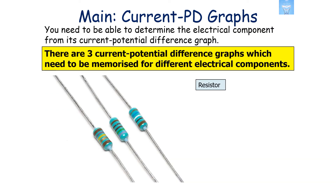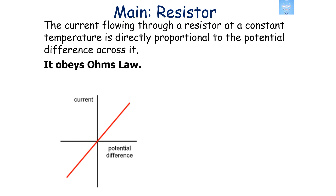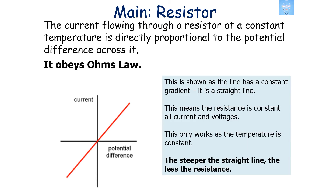You need to be able to determine the electrical component from current potential difference graphs. There are three graphs to memorise: for the resistor, the filament bulb, and the diode. For the resistor, the current flowing through it at a constant temperature is directly proportional to the potential difference across it — so the resistor obeys Ohm's law. This is shown by a line of best fit with a constant gradient — a straight line — meaning resistance is constant for all currents and potential differences.